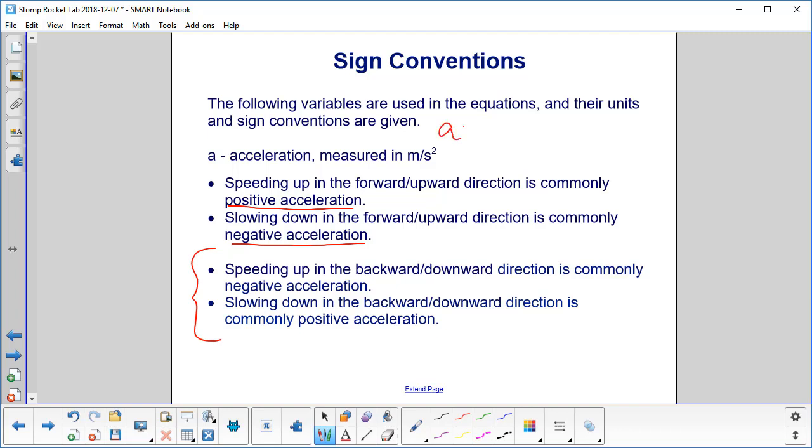Acceleration will be v final minus v initial over time. So our example, let's say we have a final velocity of negative 7 and we sped up from negative 2. And you divide that by time. You carry out the math, and what do you get there? You get a negative 5 over time. Negative 5 meters per second over time. That's negative. You have a negative acceleration. And then conversely, if you slow down in the backward-downward direction, that would be positive acceleration.